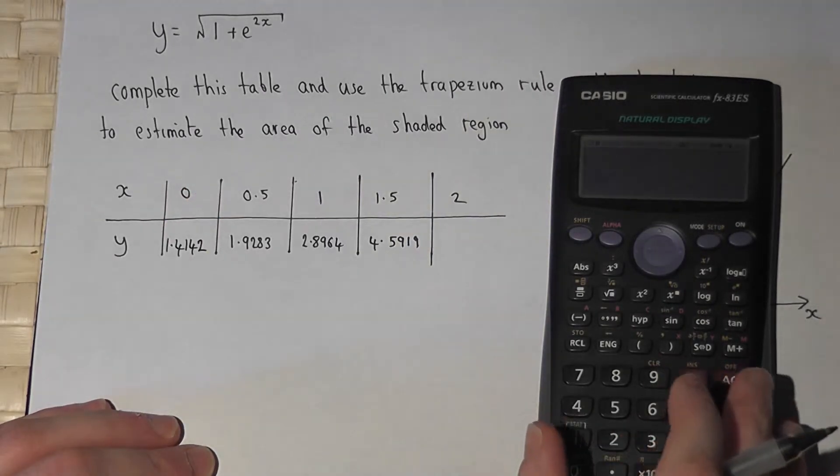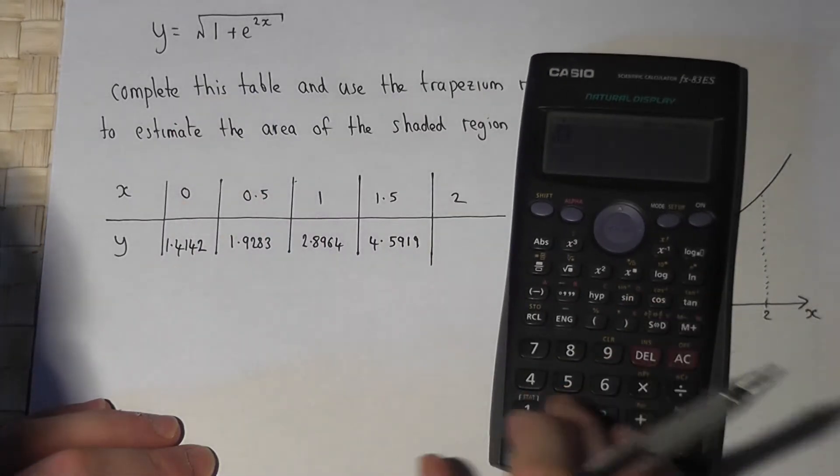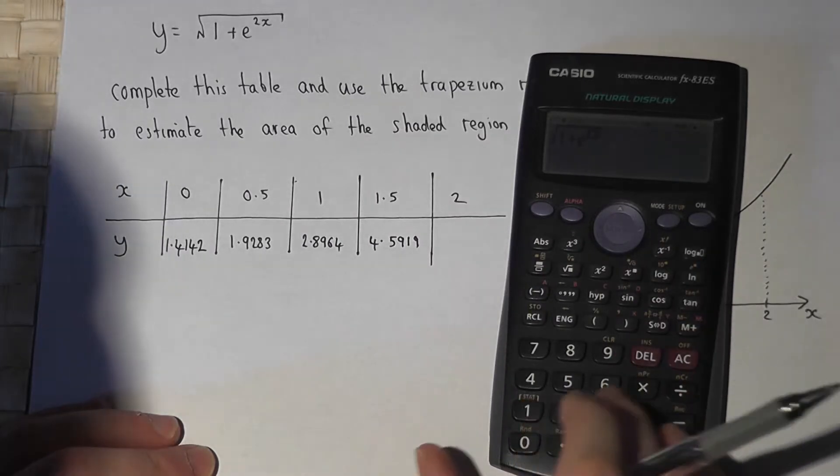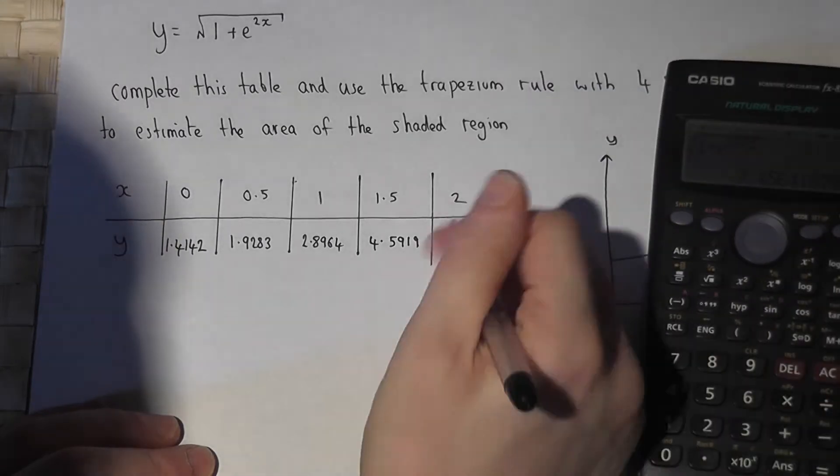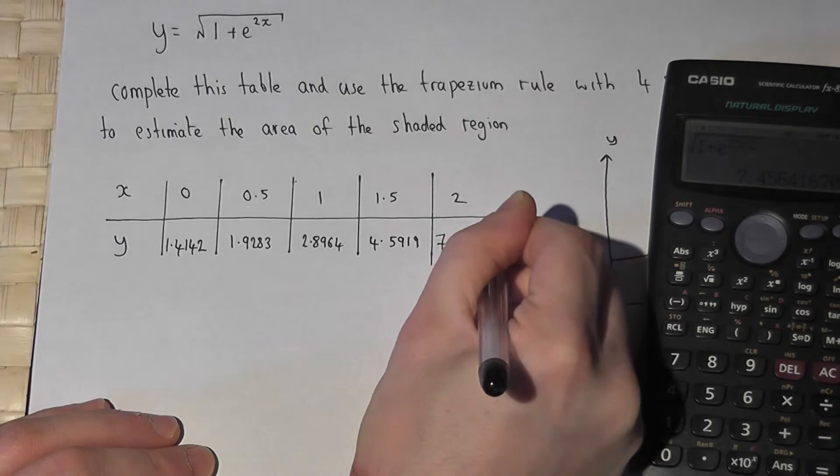And then if I let x equal 2, the square root of 1 plus e to the power of 2 times 2, I get 7.4564.